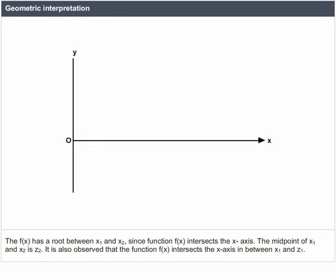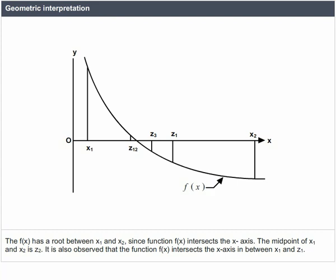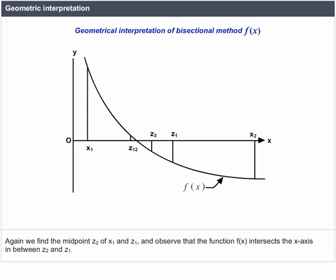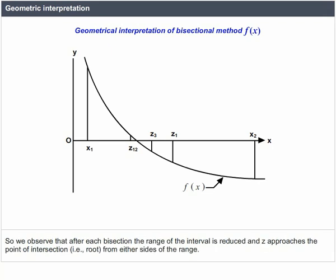Geometric Interpretation. f(x) has a root between x1 and x2 since the function f(x) intersects the x-axis. The midpoint of x1 and x2 is z1. It is also observed that f(x) intersects the x-axis between x1 and z1. We then find the midpoint z2 of x1 and z1, and observe that f(x) intersects the x-axis between z2 and z1. After each bisection, the range of the interval is reduced and z approaches the root.